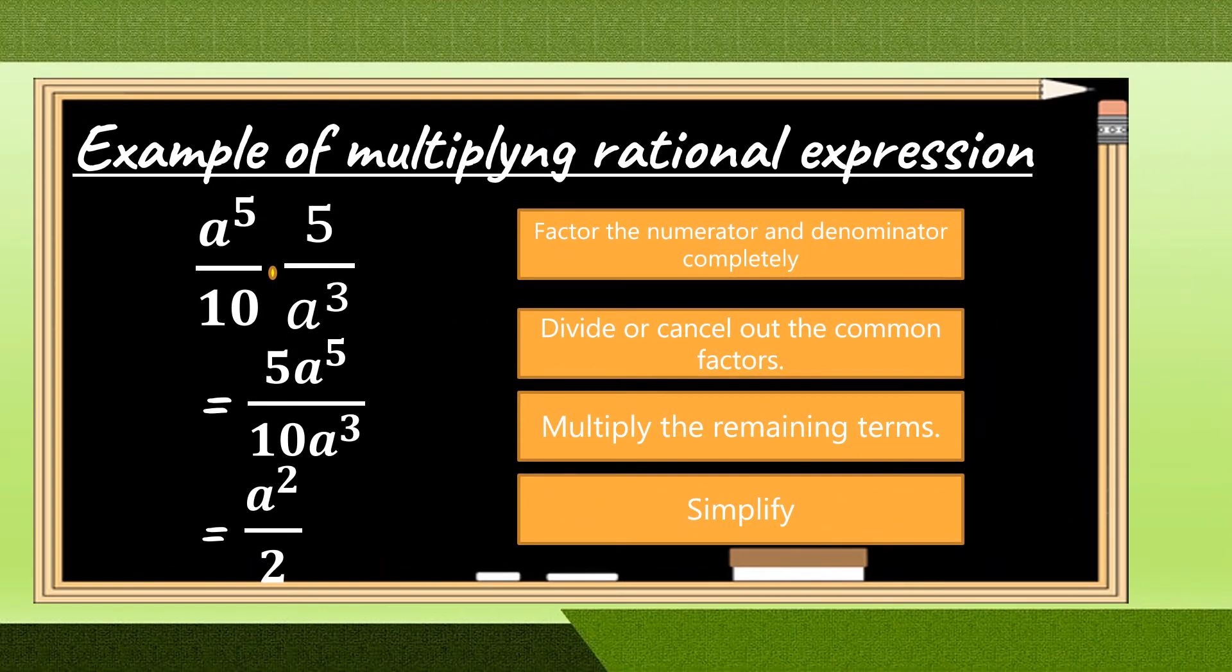Okay, so, let's have an example. A to the 5th power over 10 multiplied by 5 over A to the 3rd power. Then, we will get 5A to the 5th power over 10A to the 3rd power.